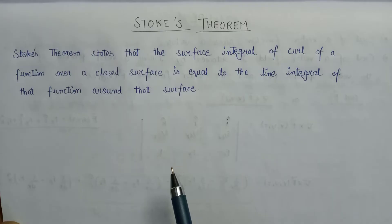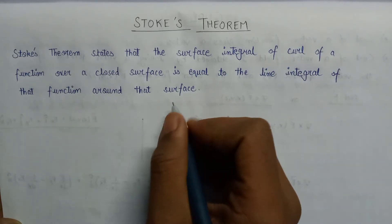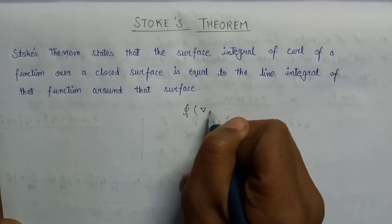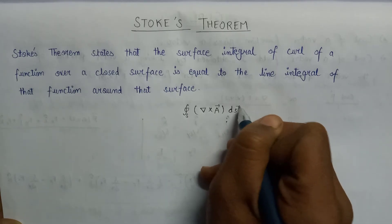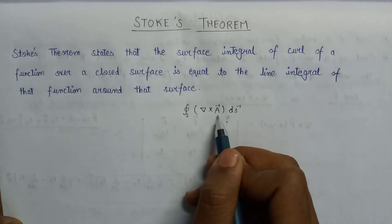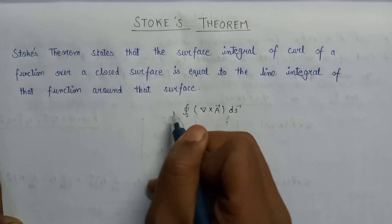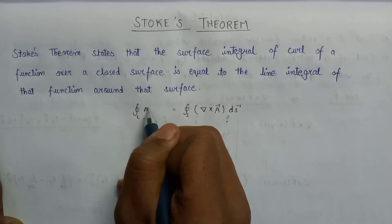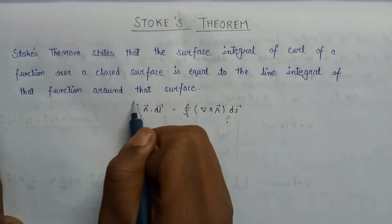The Stokes theorem has a representation like the surface integral of a curl of a function — that is del cross A over ds — so this is the surface integral of a function, and the curl of a vector equals the line integral of that function around that surface, that is A vector dot dl. This is the representation of Stokes theorem.